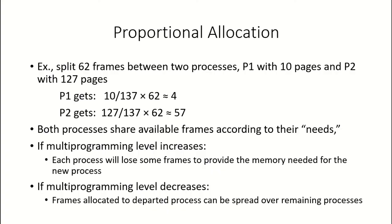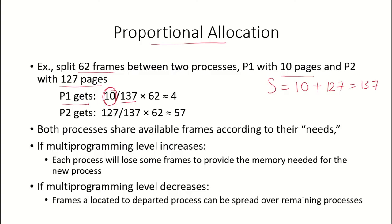With 62 frames, process P1 has 10 pages and P2 has 127 pages, so S = 10 + 127 = 137. By proportional allocation, P1 gets (10/137) × 62 ≈ 4 frames, and P2 gets (127/137) × 62 ≈ 57 frames. Since 4 + 57 = 61, which is less than 62, both processes share the available frames according to their needs.